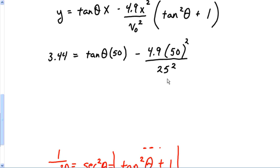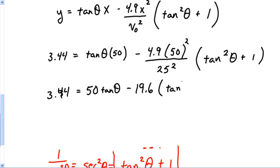I can simplify this. 50 squared divided by 25 squared, this comes out to 4. So this ends up being 3.44 equals, I'm going to rewrite that as 50 tangent theta minus 19.6 tangent squared theta plus 1.